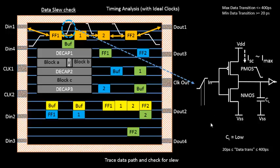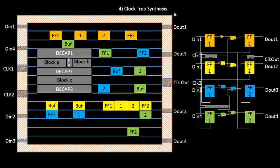After the basic timing analysis with ideal clocks at the optimized placement stage, the next step is clock tree synthesis. In clock tree synthesis, each clock — for example clock 1 — must reach its respective flip-flops at the correct time. Clock 1 connects to flip-flop 1, flip-flop 2, and other flip-flops. The key concept is skew: the expectation that the clock reaches all connected flip-flops at the same time, since unequal arrival times lead to timing violations.